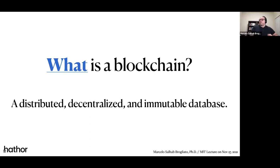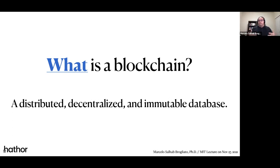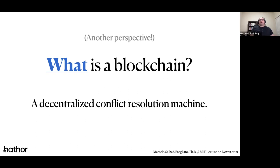It's decentralized because there's no central point to make decisions. All decisions are made individually by each node and they reach consensus through the consensus algorithm that we saw last lecture. And it's immutable in the sense that after we write to the blockchain and it's confirmed, we cannot delete it, we cannot change it — it's written in the blockchain forever. Last lecture, we discussed deeply how it works, how the network can be distributed, decentralized, and reach immutability.